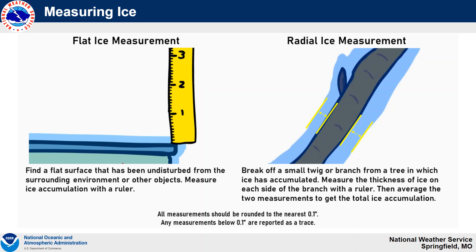When we talk about measuring ice, it's important to remember the difference between measuring ice on flat surfaces such as roadways or maybe a back deck railing or some steps, versus ice that accumulates on radial surfaces such as twigs, tree branches, or power lines. When measuring on flat surfaces, use a ruler and measure the ice accumulation to the nearest tenth of an inch. Anything below a tenth of an inch is reported as a trace. When measuring on radial surfaces like a twig or tree branch, you want to measure the thickness of ice on each side of the branch and then take an average of those two measurements to get the total ice accumulation.